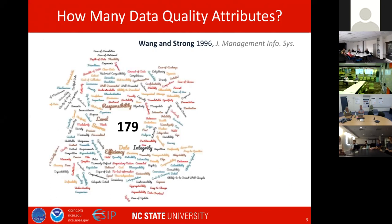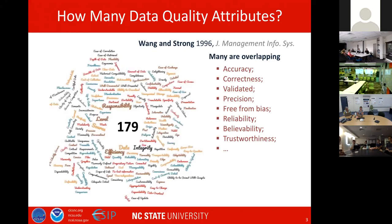How many data quality attributes are there? Based on the Wang and Strong 1996 paper, which surveyed data consumers, there are at least 179 quality attributes. Many of them are overlapping, and they include things like expertise, correctness, validated position, free from bias, et cetera.